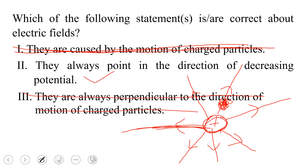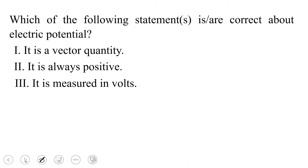Let's move forward. Which of the following statements is or are correct about electric potential? Statement one says it is a vector quantity. Is electric potential a scalar or a vector quantity? That's one of the elementary introductions to electric potential — it is a scalar quantity. Electric potential is not concerned with direction, so it's a scalar.